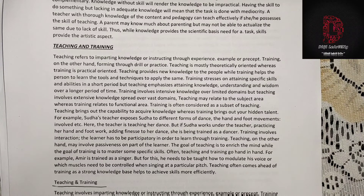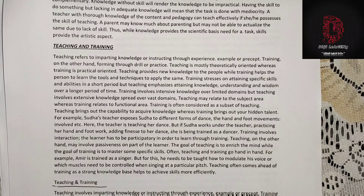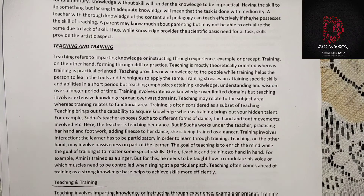Often, teaching and training go hand in hand. For example, a singer needs to understand which muscles need to be controlled when singing at a particular pitch — this involves both knowledge and trained skill. Teaching often comes ahead of training, as a strong knowledge base helps to achieve skills more efficiently.